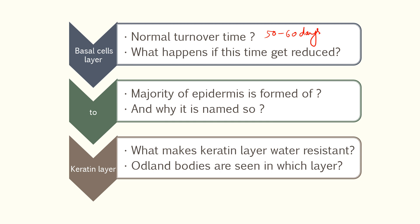Now what happens if this time gets reduced? For example, we see this in psoriasis. In psoriasis, the turnover time becomes around seven days and there is parakerytosis. Now, another question: the majority of the epidermis is formed of — you can tell — it's the stratum spinosum.